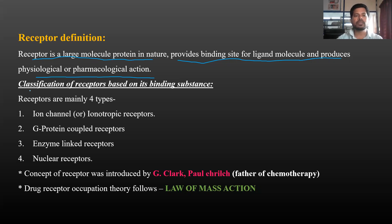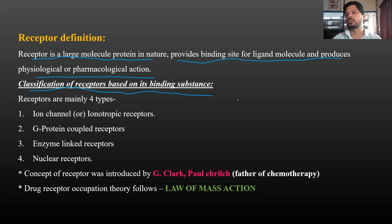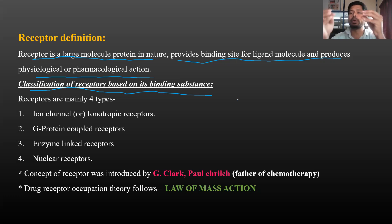Next, the classification of receptors is based on its binding substance. There are four types of receptors in the body, and we have to classify the receptors based on their binding substance.